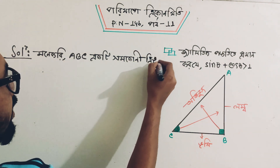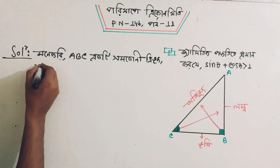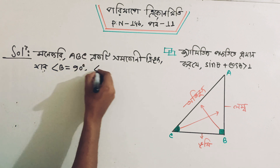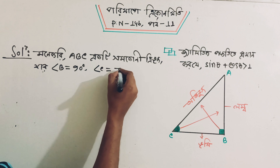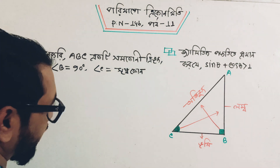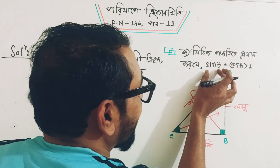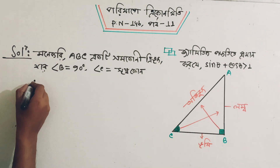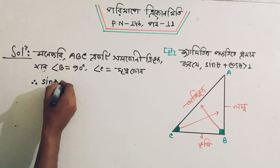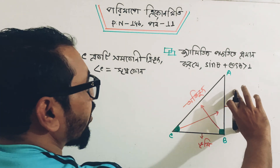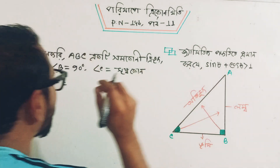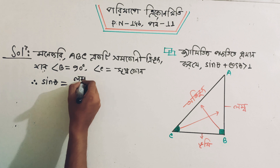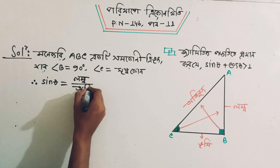Suppose ABC is the right angle triangle, that is 90 degrees, then C is equal to the right angle. The right angle is sin and cos. Since the angle is the right angle, the right angle is the right angle. Lumber divided otivus — that means sin, that means Lumber divided otivus.